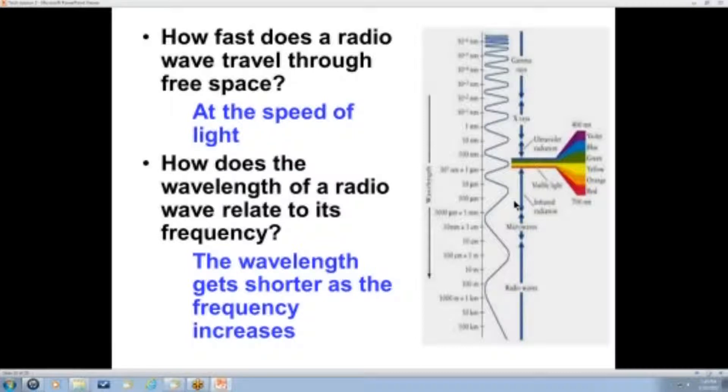How fast does a radio wave travel through free space? It travels at the speed of light. How does the wavelength of a radio wave relate to its frequency? The wavelength gets shorter as the frequency increases. And this graphic shows that fairly well. Here we have radio waves, which are fairly low in frequency, and the waves are long. Here we go into microwaves, which are higher in frequency. The waves get shorter. Here we go to visible light, which is much higher frequency than the radio waves. The waves get shorter. X-rays shorter still. Gamma rays shorter still. So as the frequency goes higher, the wavelength gets shorter.